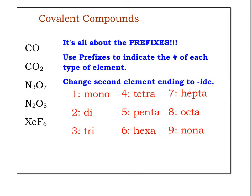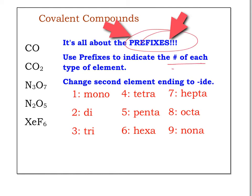These covalent compounds, also known as molecular compounds — we have to know that it is all about the prefixes. These prefixes are so important that you can see I put arrows around them. In covalent compounds only, that's the only place we're ever going to see these prefixes. These prefixes indicate the number of each type of element.